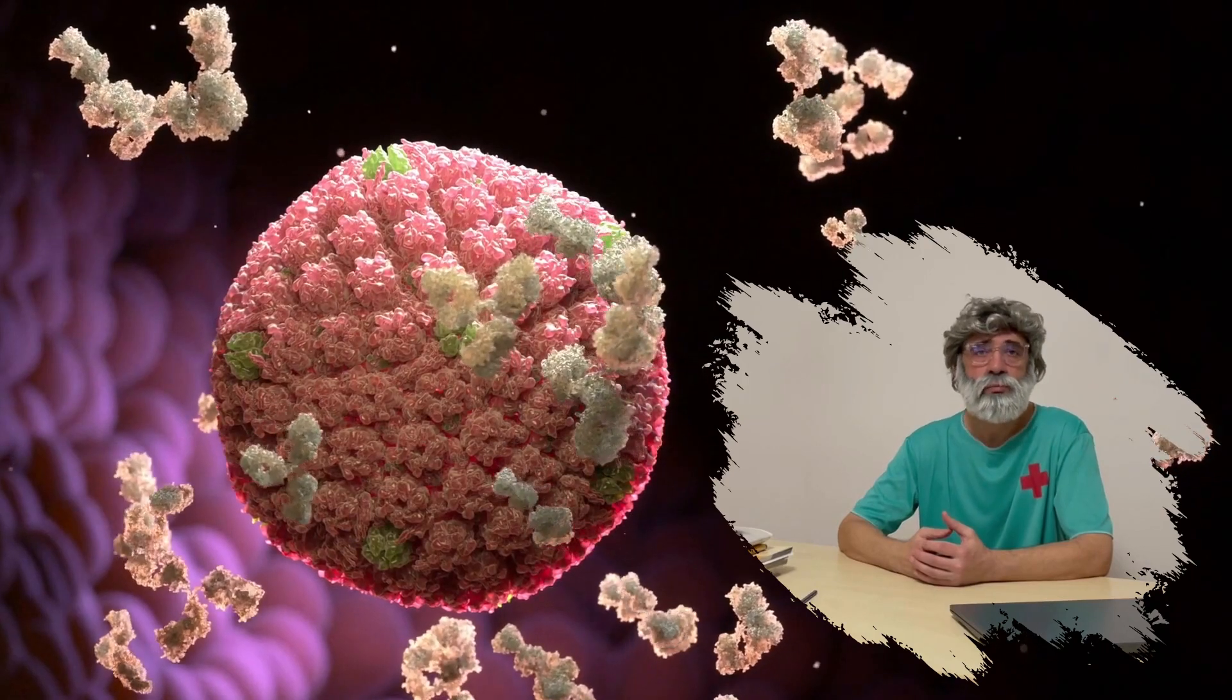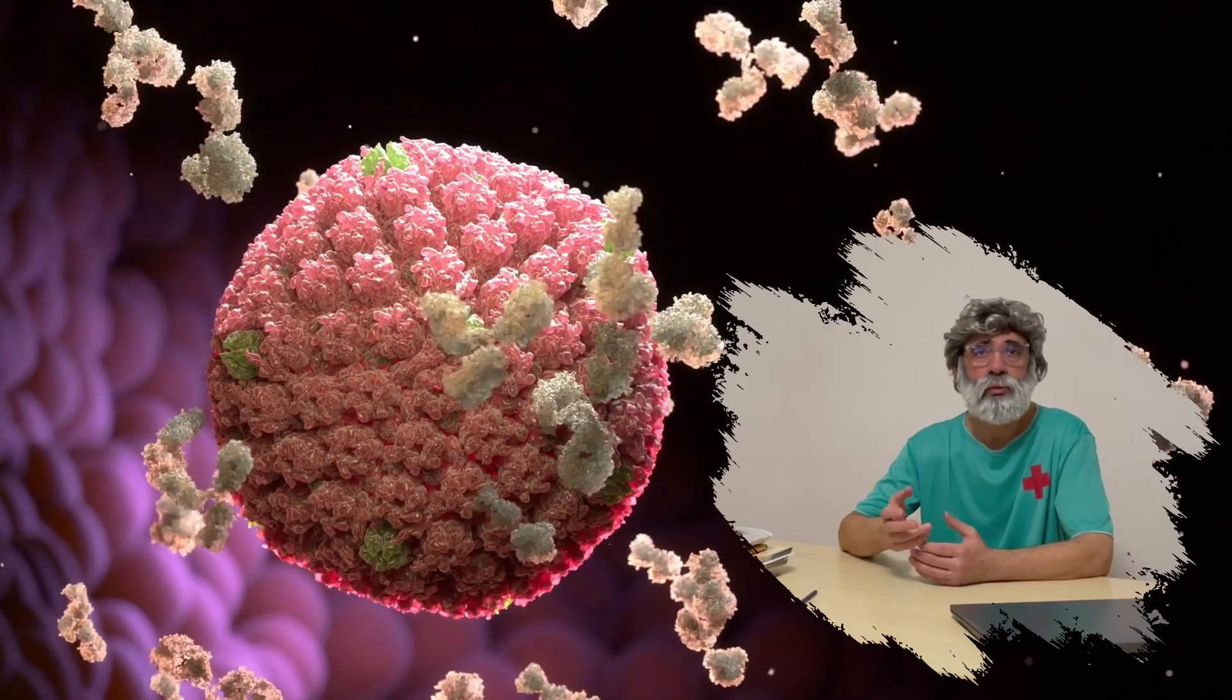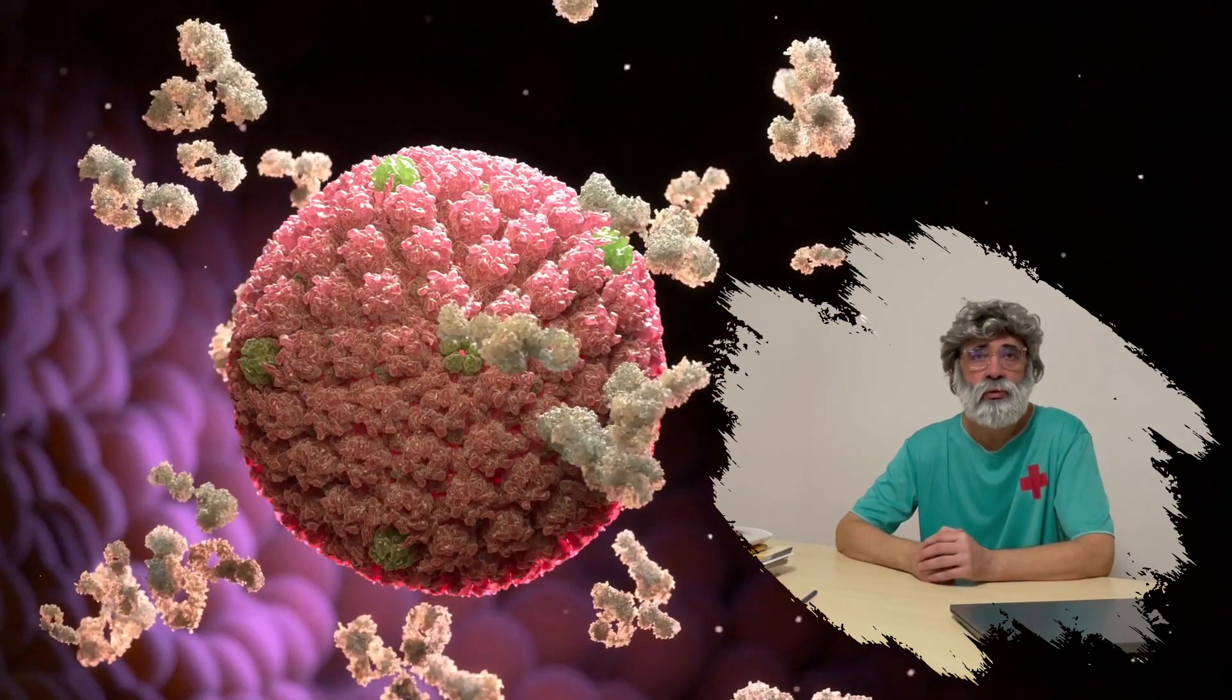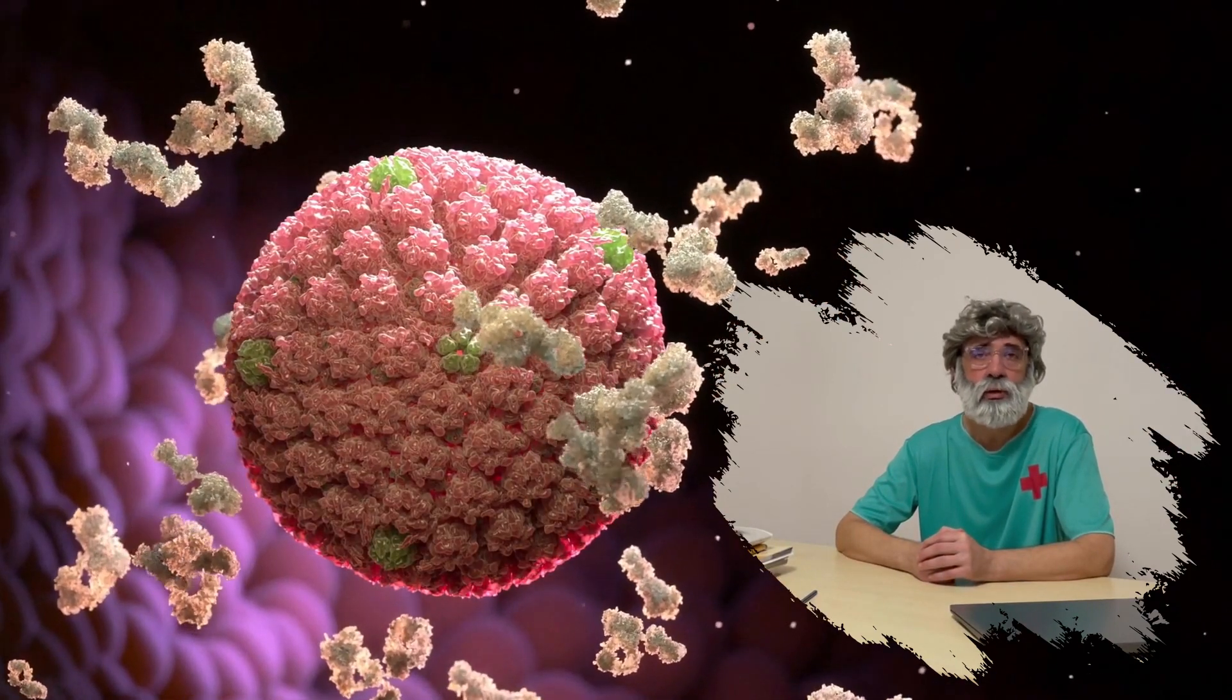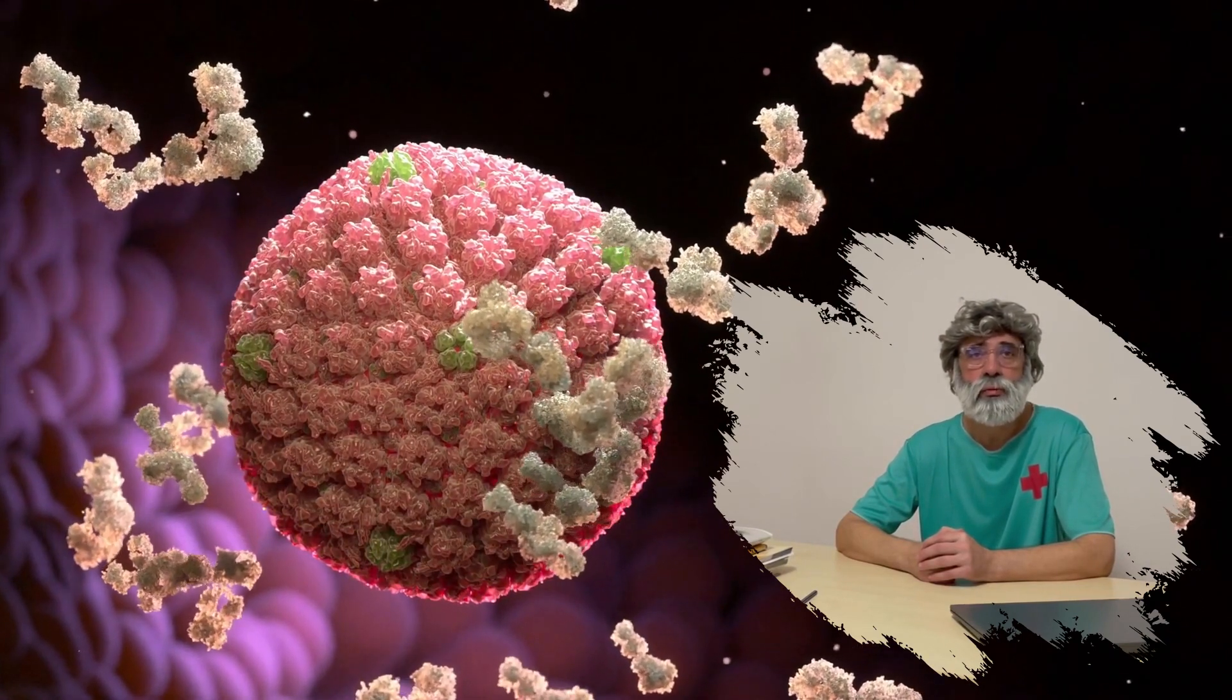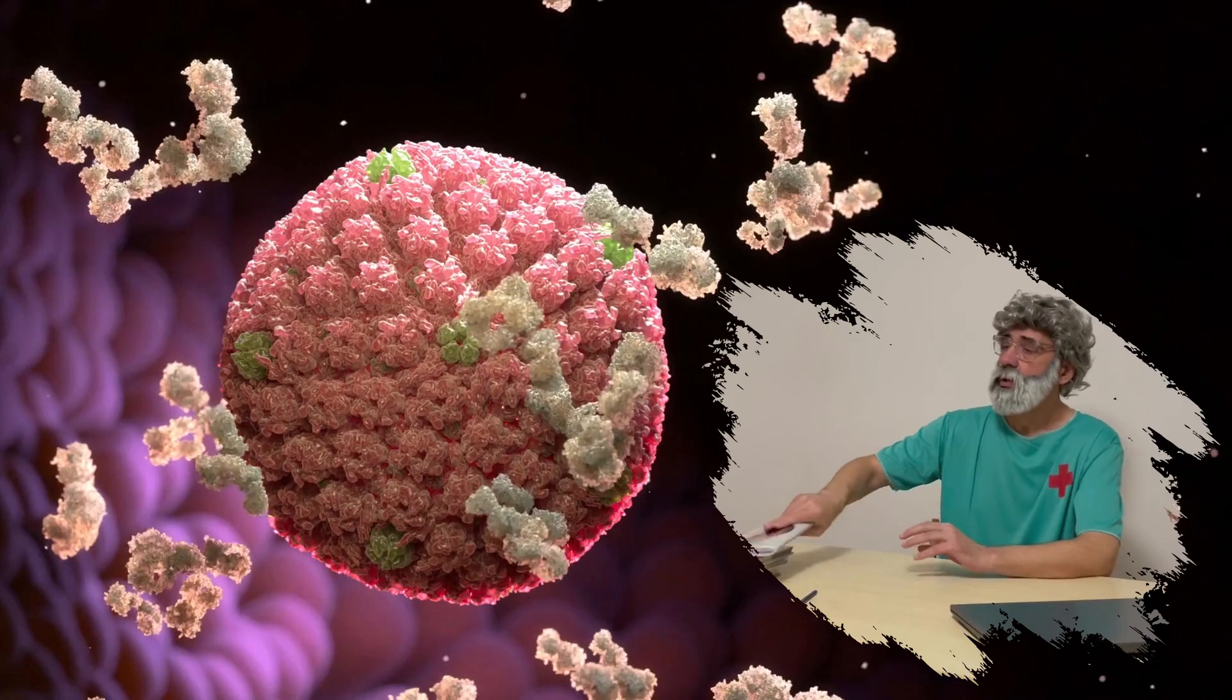They are the first and second types. Simplified, we can say that the herpes simplex virus of the first type affects people up to the waist, and the herpes simplex virus of the second type affects people below the waist. That is exactly why it is also called genital herpes.